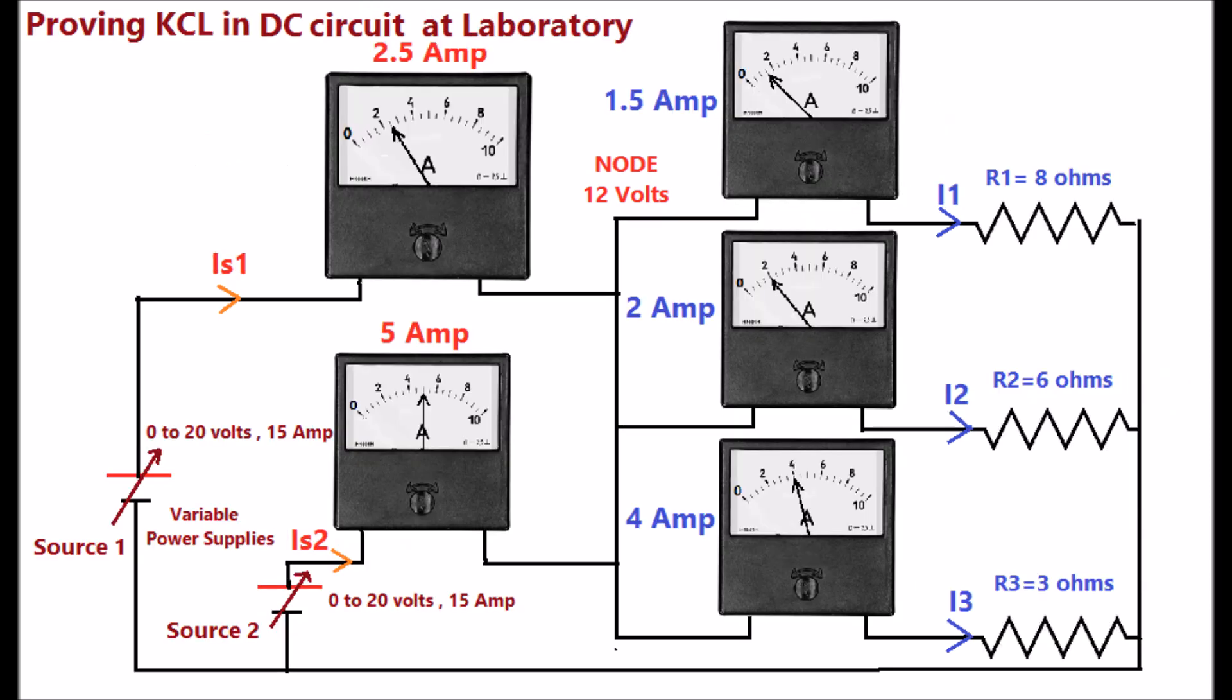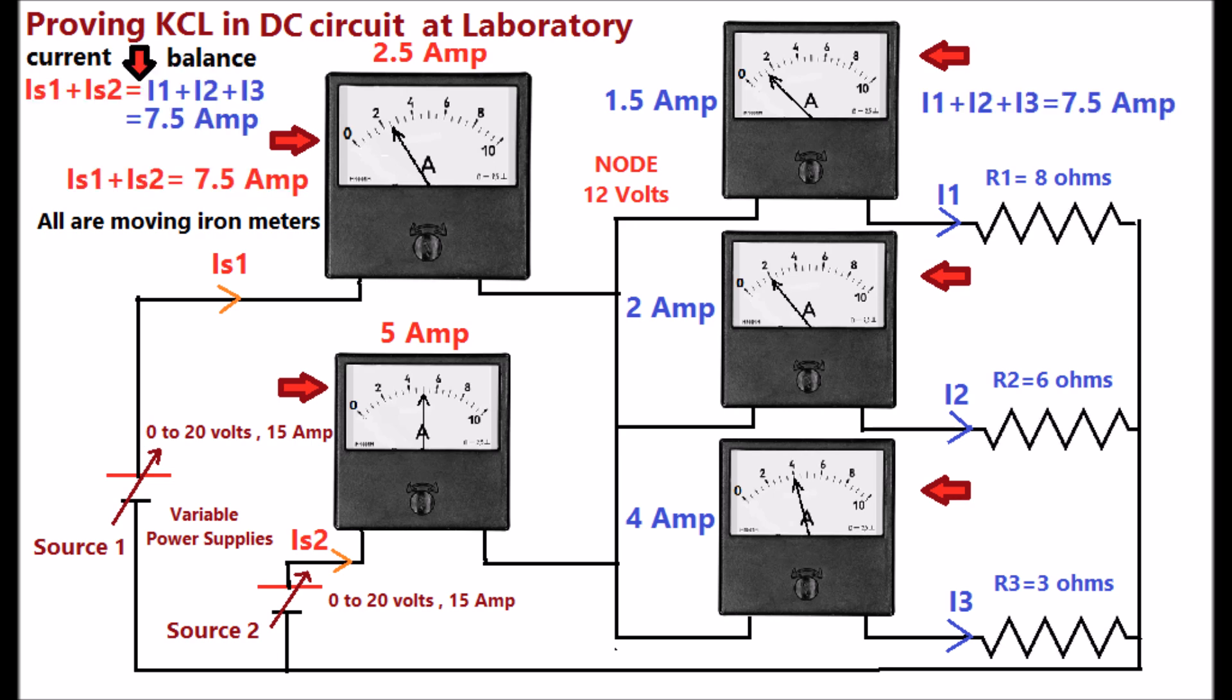Laboratory setup for proving KCL in DC circuit is displayed. Five moving ion meters are used for measuring the two incident currents IS1 and IS2 and the three load currents I1, I2 and I3. The values are displayed and the current balance based on KCL is shown in the display, which is equal to 7.5A as discussed earlier with the DC circuit.